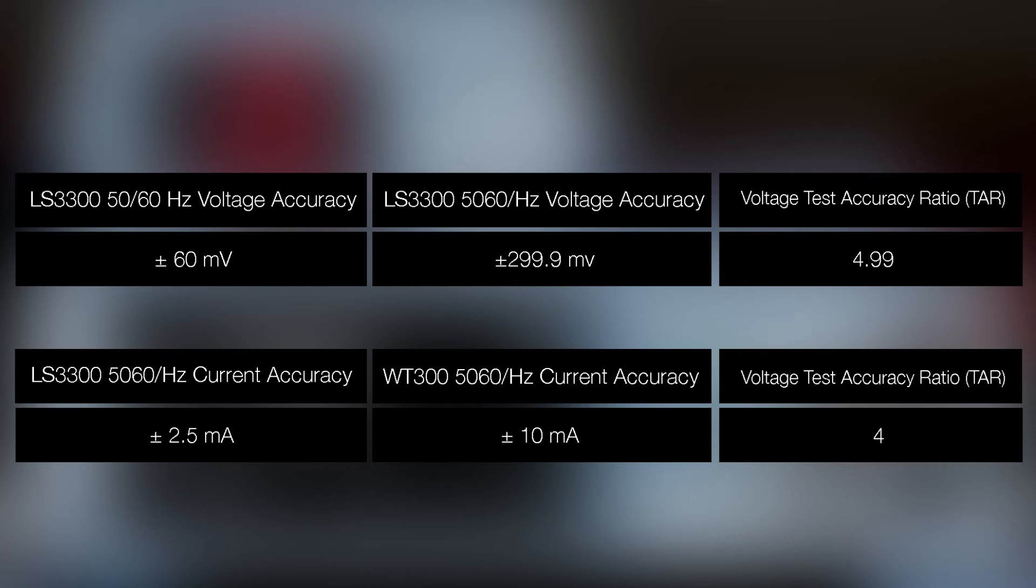The calculated accuracies for the WT300 are within the plus minus 0.15 percent accuracy specification for this series and thus confirms the accuracy of the instrument to specification.